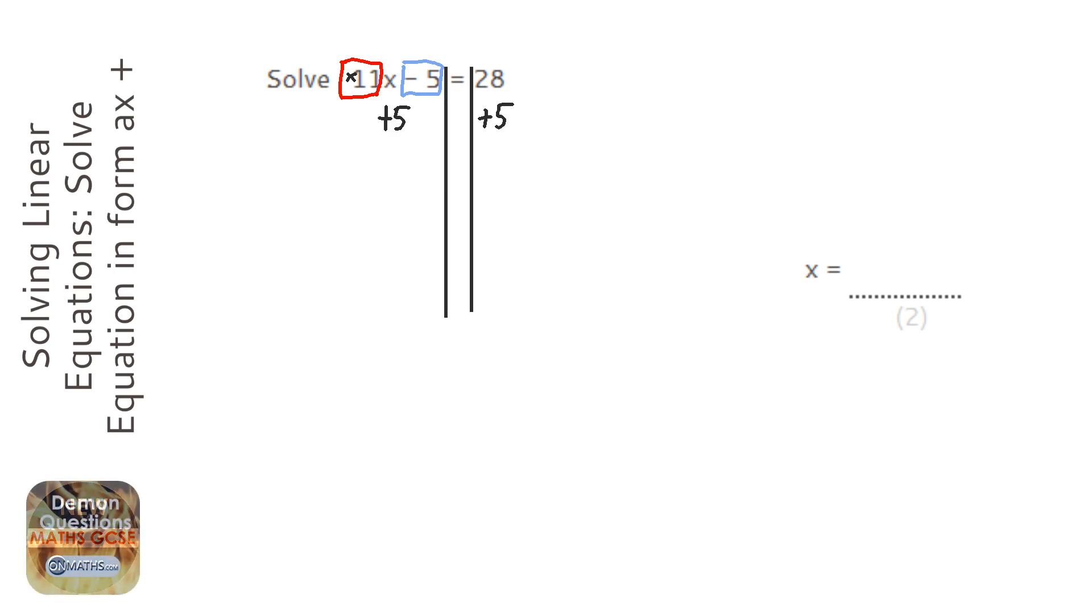So we had 11x minus 5. Now we just have 11x. We haven't done anything with the 11 yet. And we're going to add 5 to this side, which will be 33.